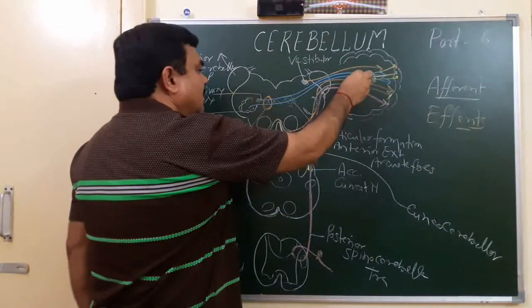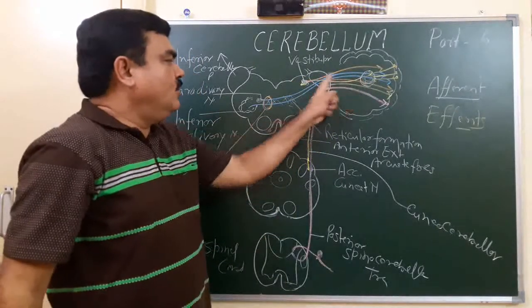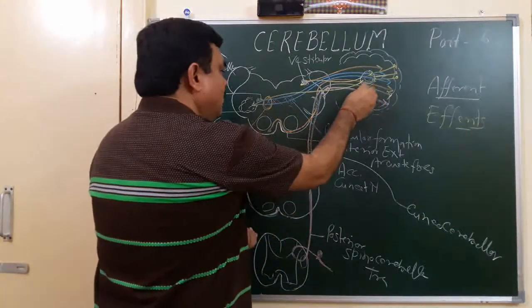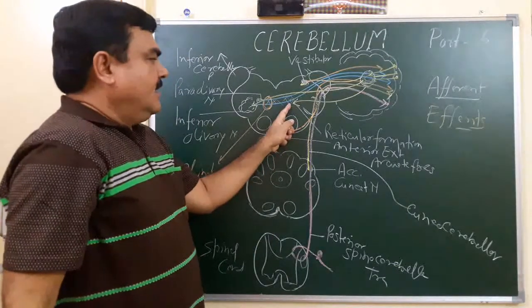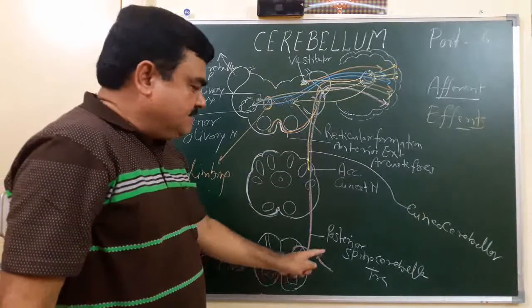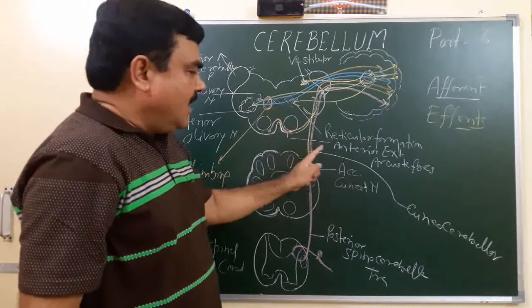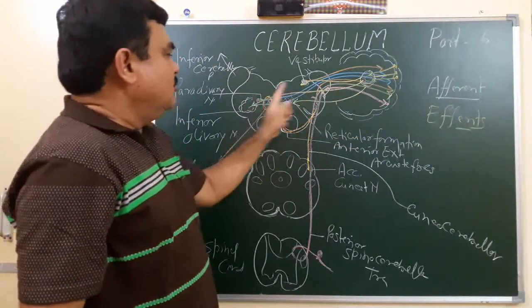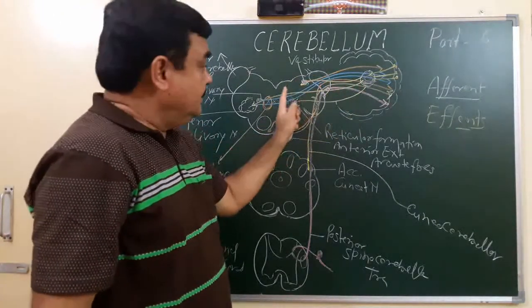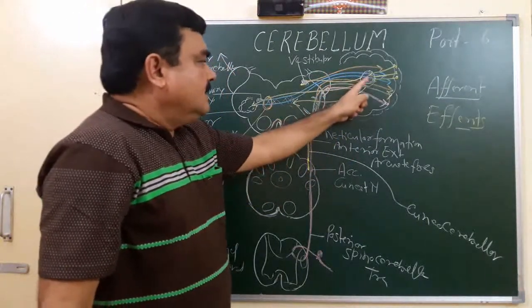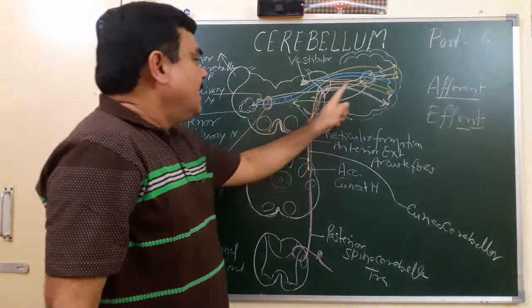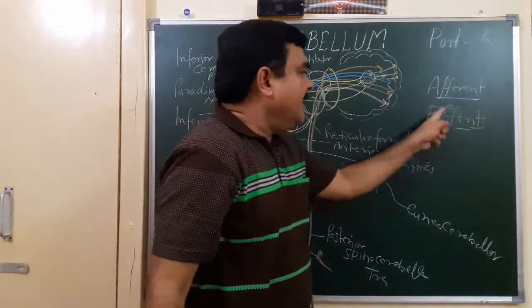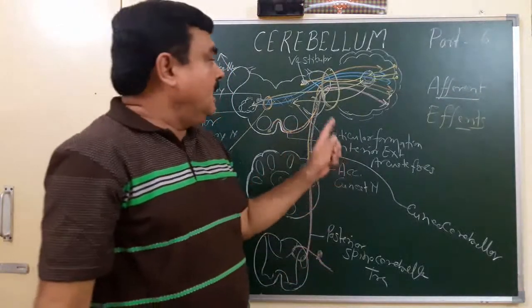The efferents are cerebellovestibular fibers, cerebelloreticular fibers, cerebello-olivary fibers, and paraolivocerebellar fibers. The afferents include olivocerebellar, paraolivocerebellar, and vestibulocerebellar fibers, while the efferents are cerebellovestibular, cerebello-olivary, and cerebelloreticular fibers. All these fibers pass through the inferior cerebellar peduncle.